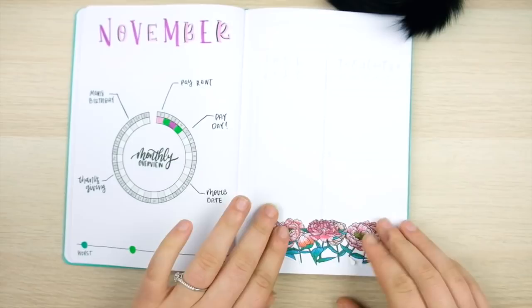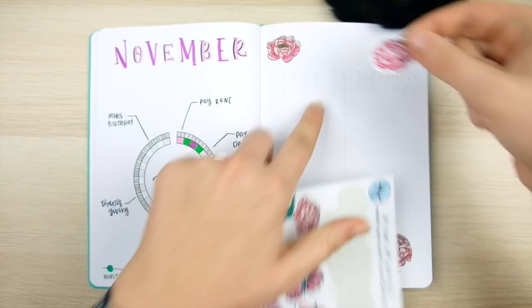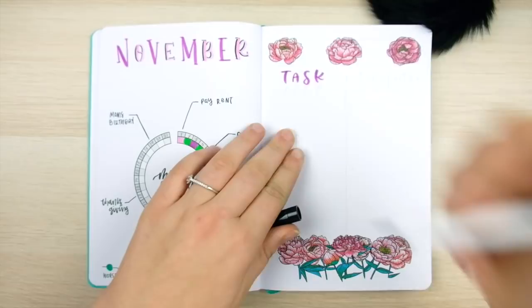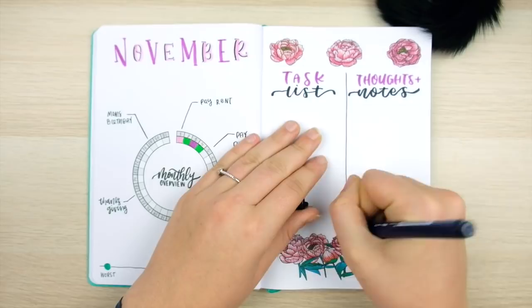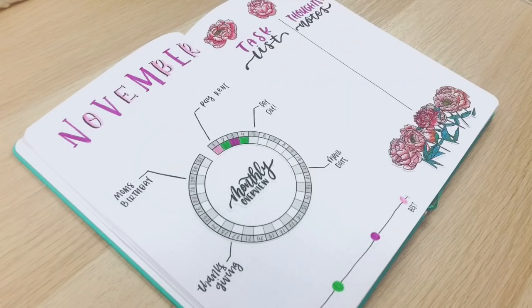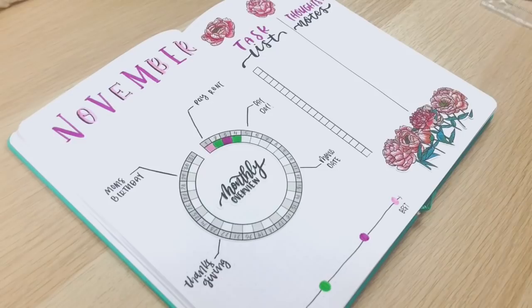So now that the left side of this spread has the monthly log and the mood tracker, I'm going to move on to the right side. For my task list I'm first using the peony stickers from my shop for decoration and I'm then just splitting the page in half. The left side will be for my task list and I'm using one of my checkbox stickers for this as well. The right side will then be titled Thoughts and Notes and it'll be a spot for me to jot down any stray ideas, notes, or reminders throughout the month that don't quite belong on your monthly log. And I'm splitting this up into business and personal.